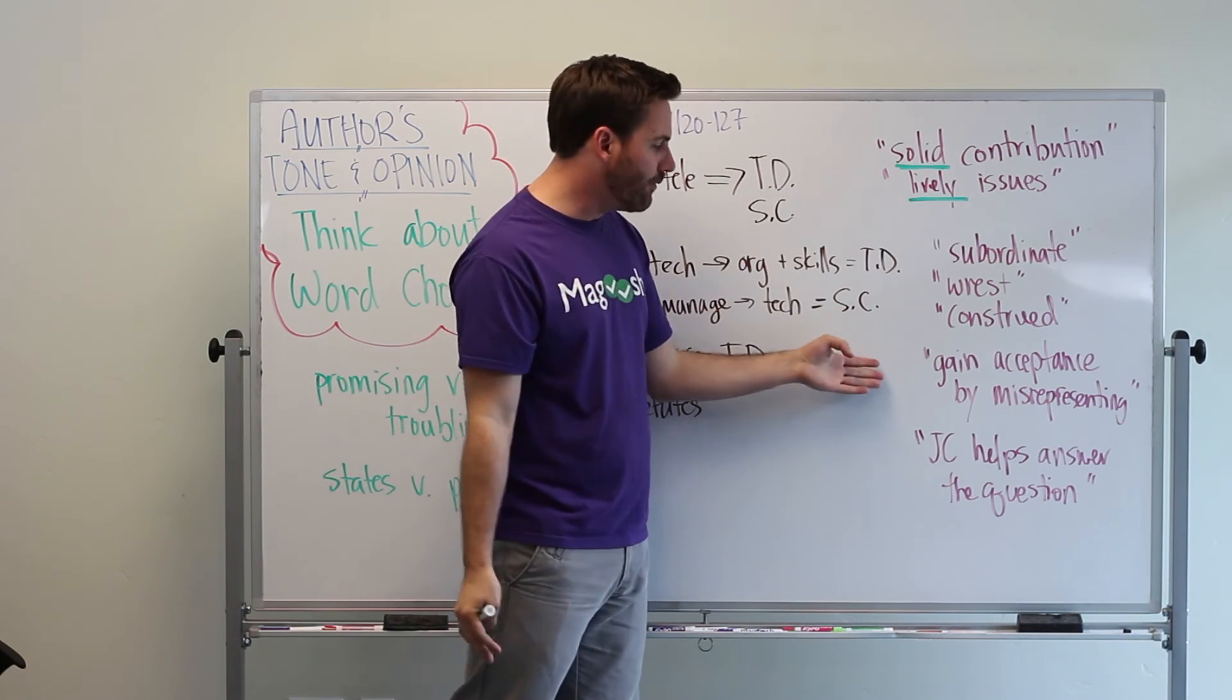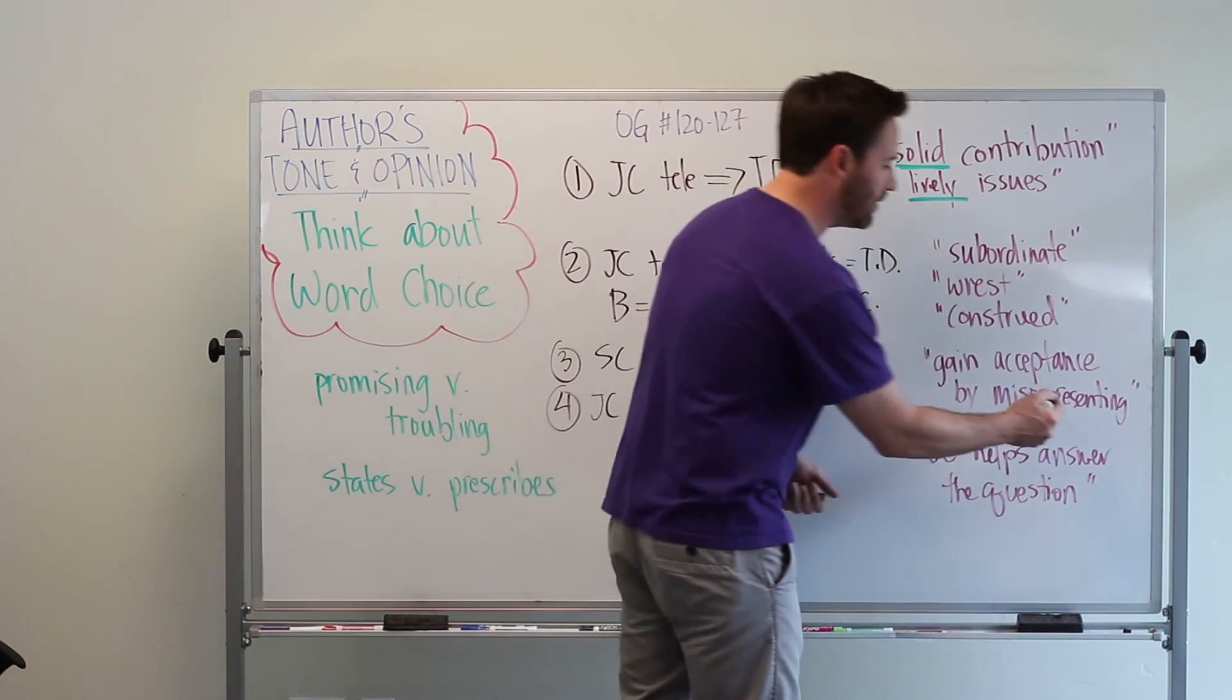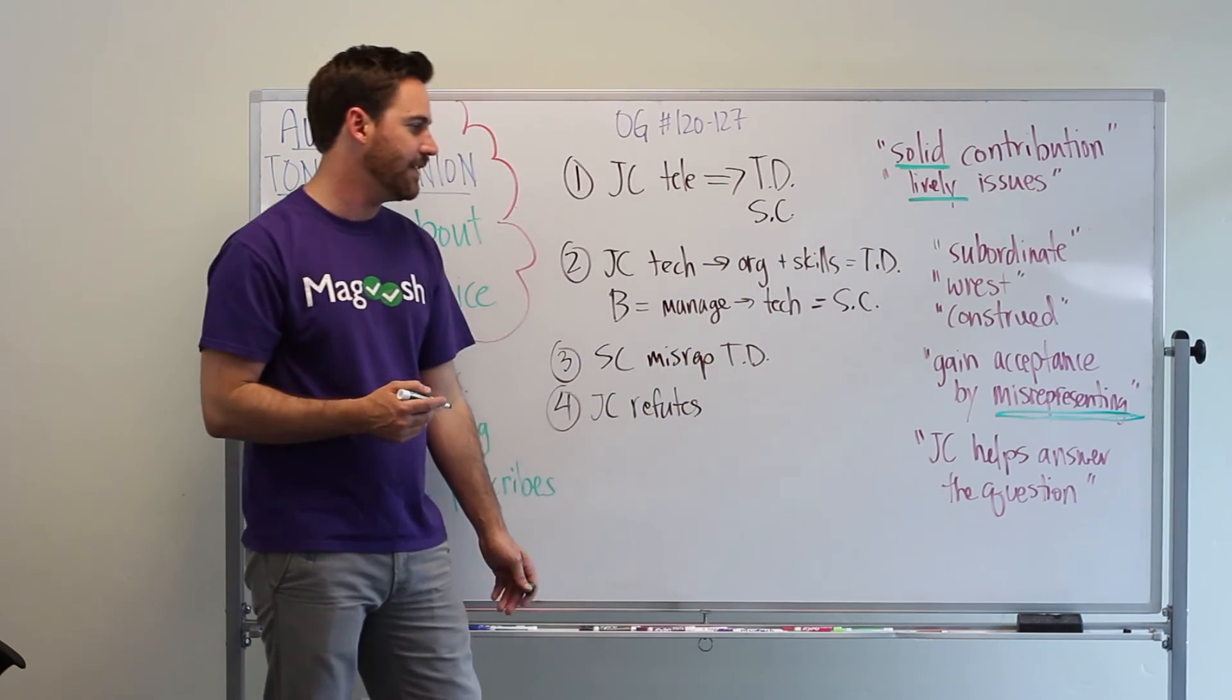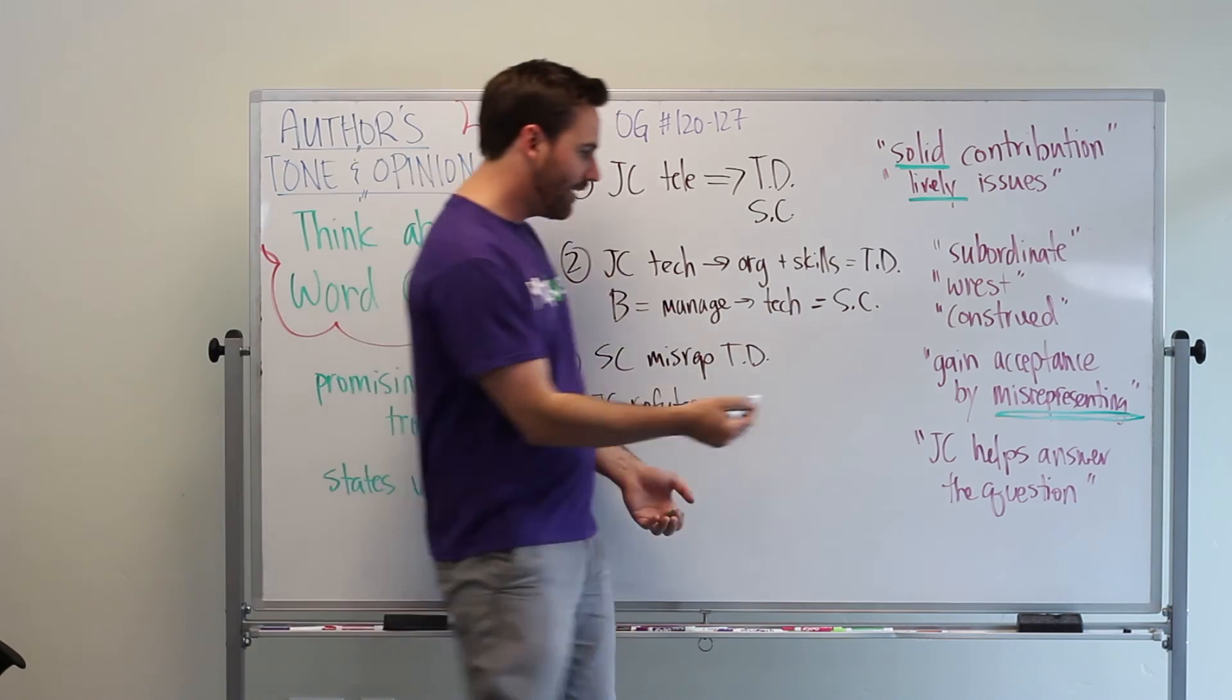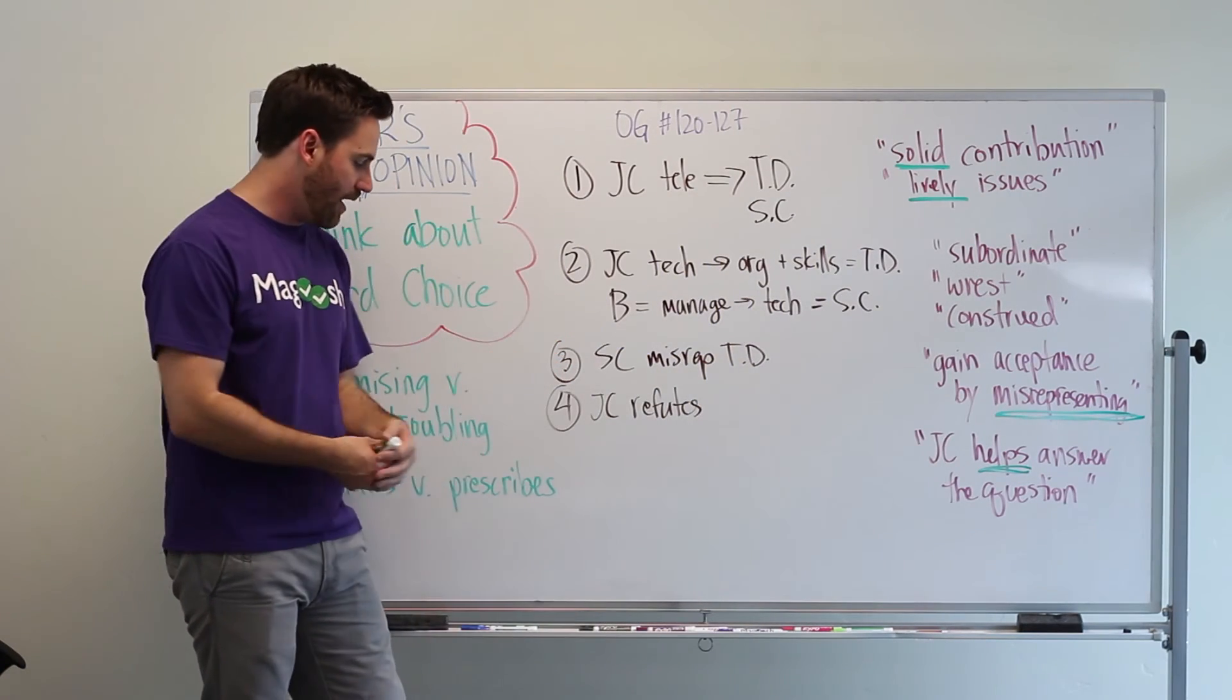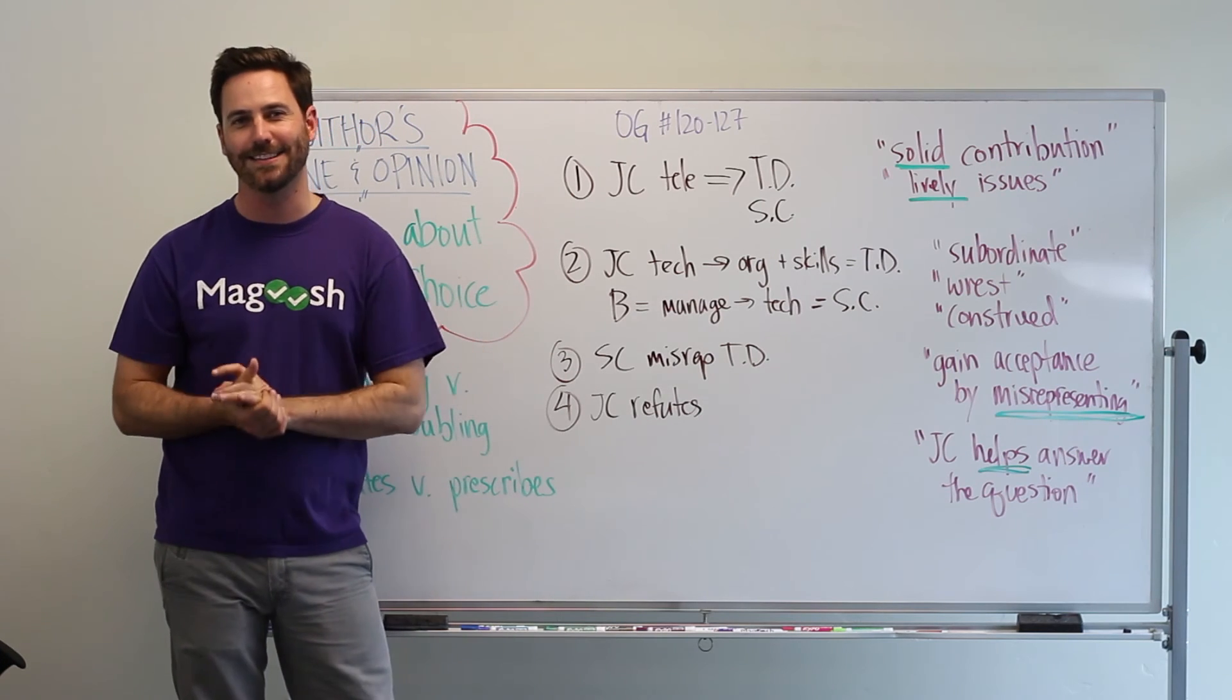Going forward, we saw gain acceptance by misrepresenting. This is a hugely strong word that is telling me about how the author feels. And then finally, at the very end, the author says, JC helps answer the question. Help! Helps answer the question. This is a great signal that the author has a very positive feeling and association with JC and his studies.